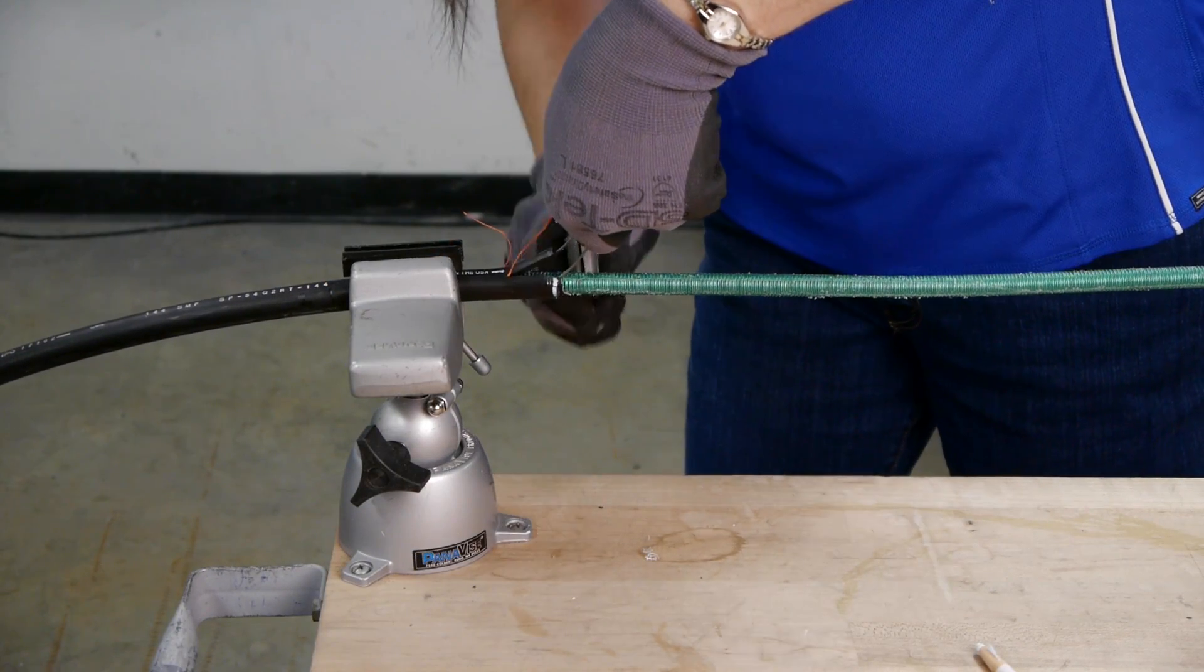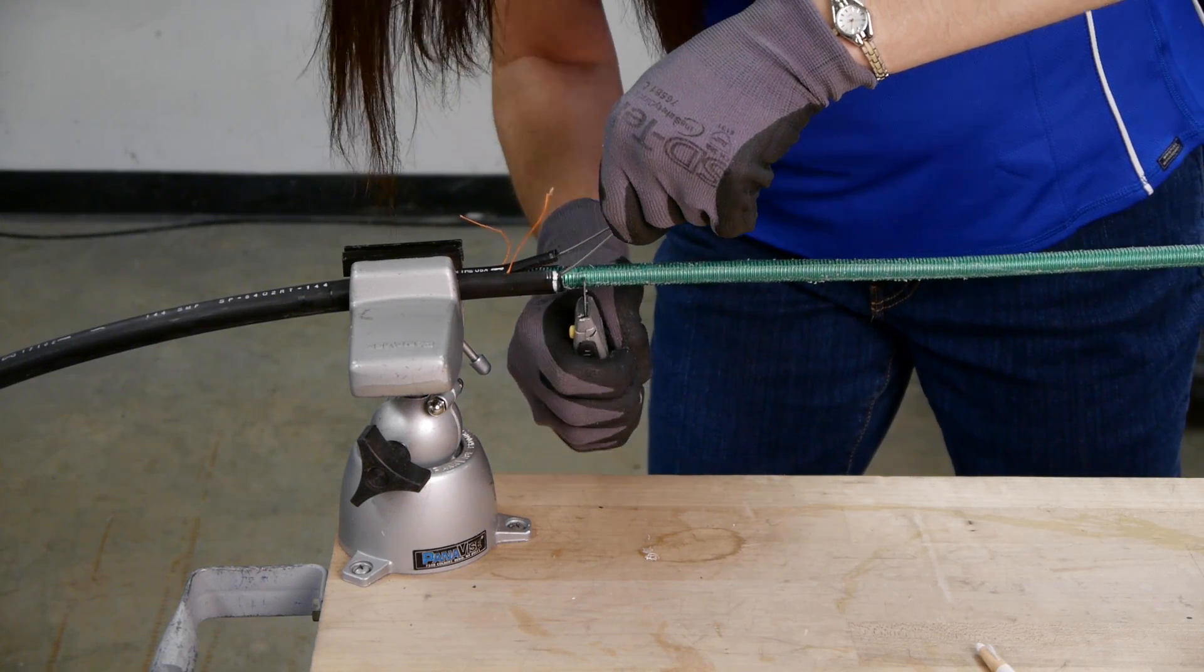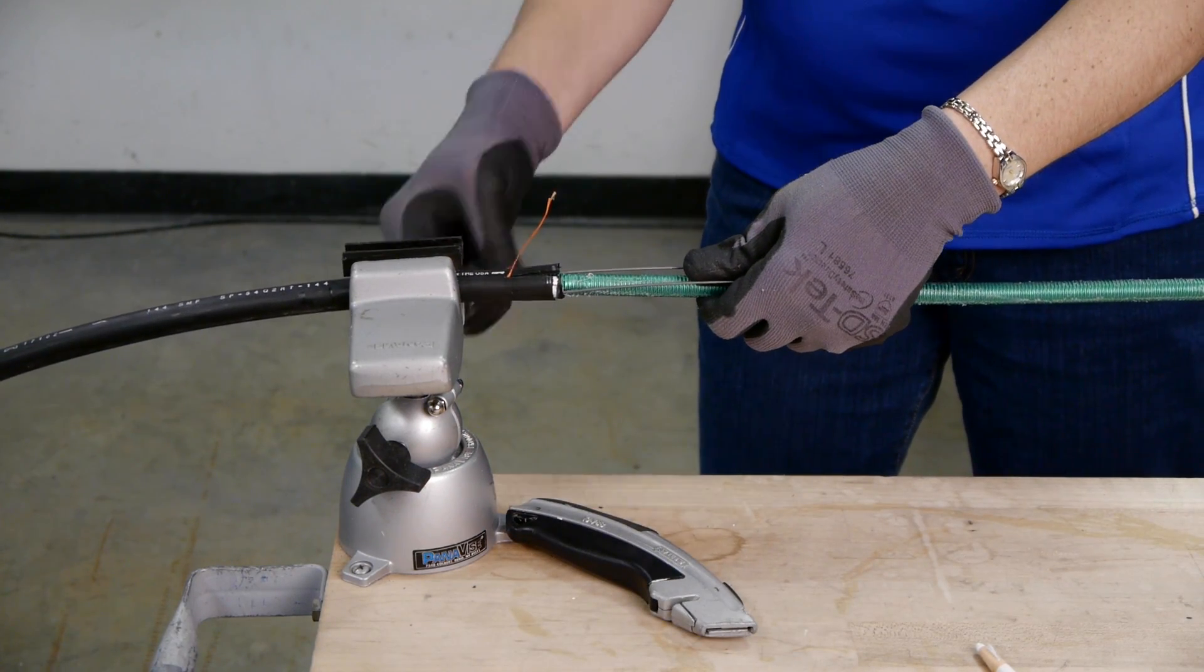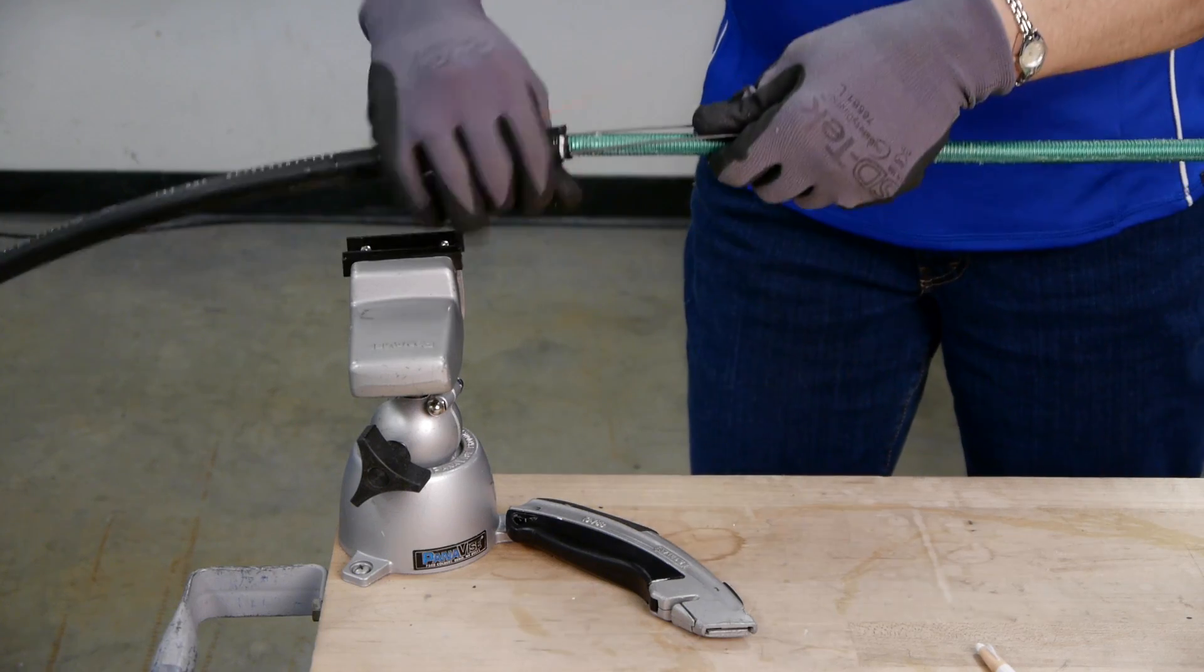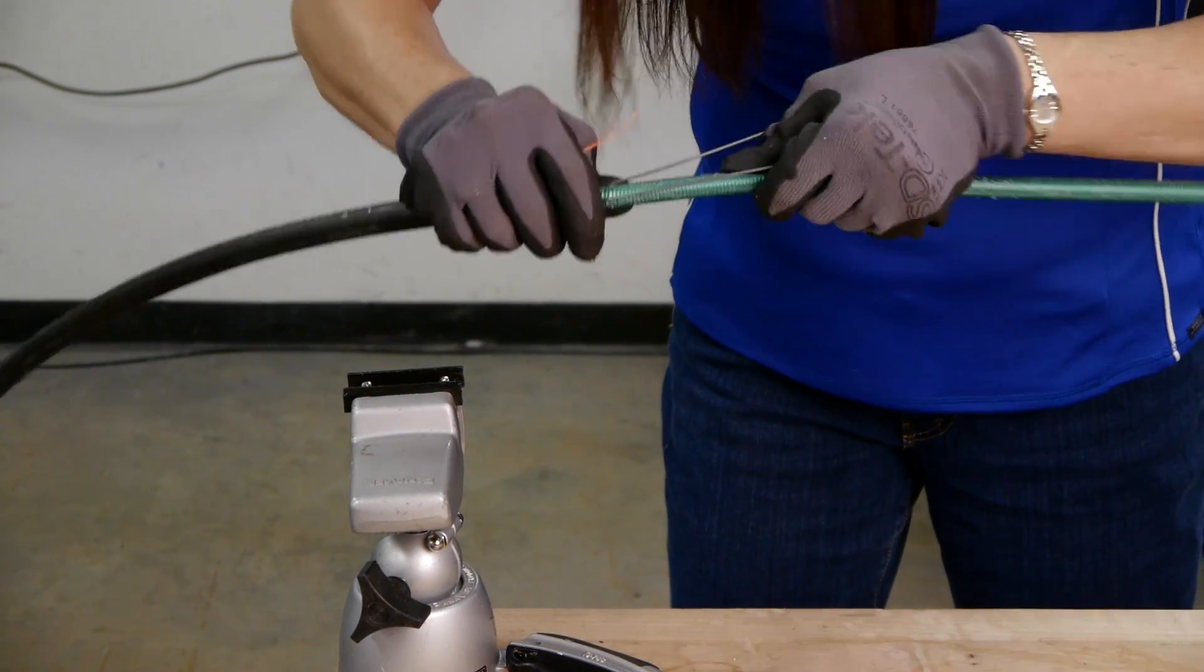At marked ends of the cable, score armor as close to the jacket as possible and flex armor. After flexing armor, additional scoring of armor may be required.